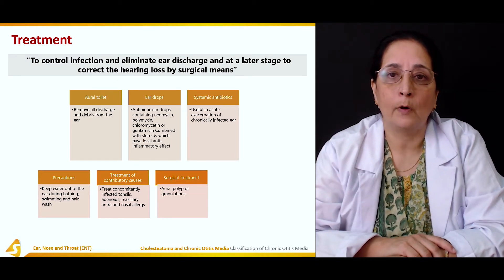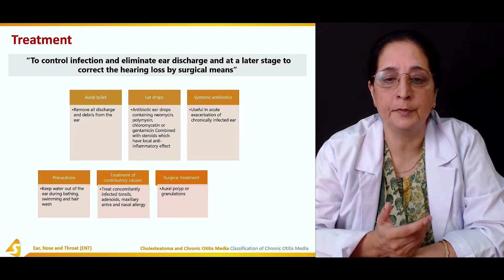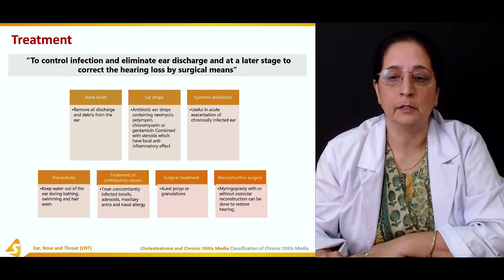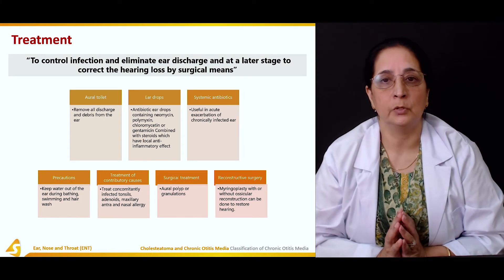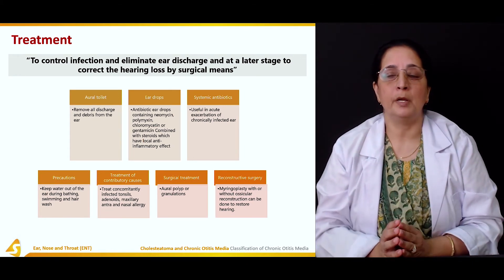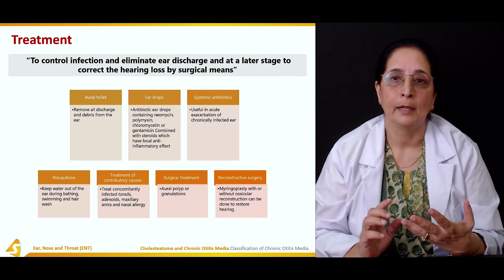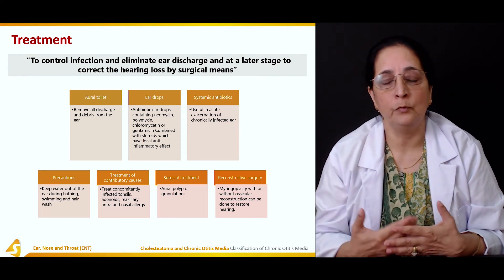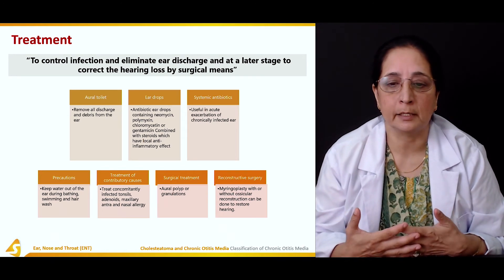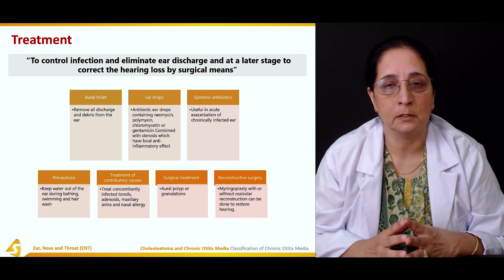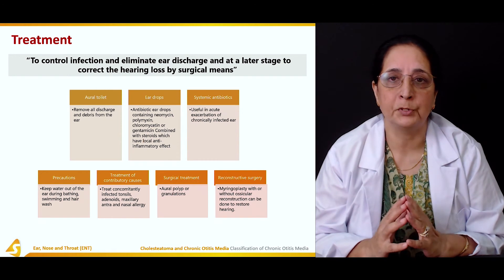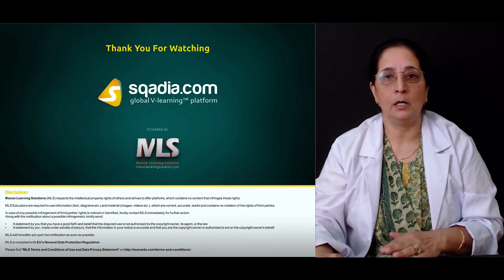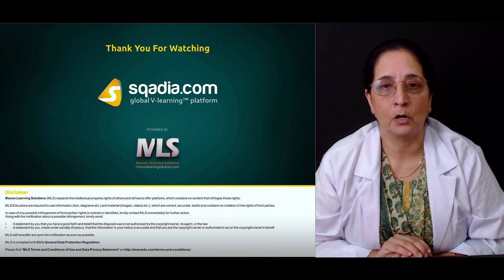Surgical treatment includes removal of aural polyps or granulations if present. Reconstructive surgery including myringoplasty with or without ossicular reconstruction can be done to restore hearing. So the treatment options range from ear cleaning and ear drops to systemic antibiotics, and if needed, surgery to remove granulations, remove polyps, and reconstruct the tympanic membrane and ossicles — depending on the individual case. That covers the treatment and classification of chronic otitis media.